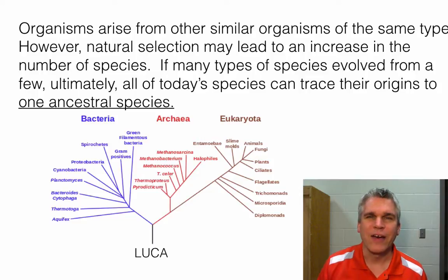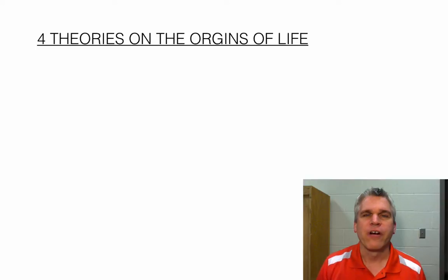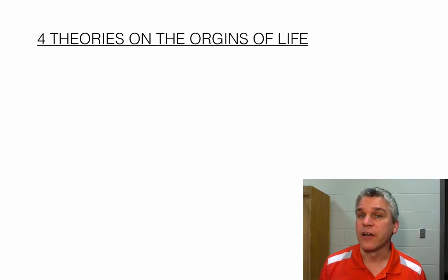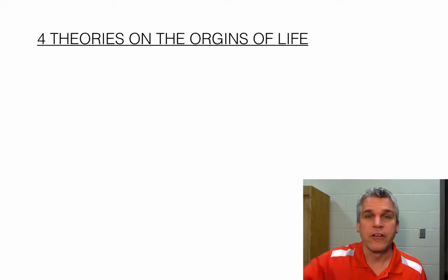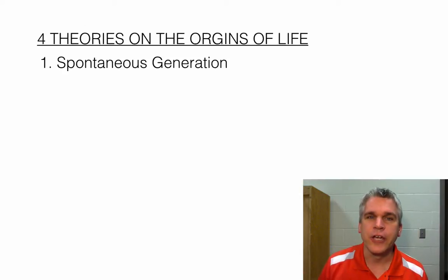The question is, how did that first species come around? Well, that's what we're going to take a look at today. There are four theories on the origins of life, on how life may have started on Earth. The first is called spontaneous generation.